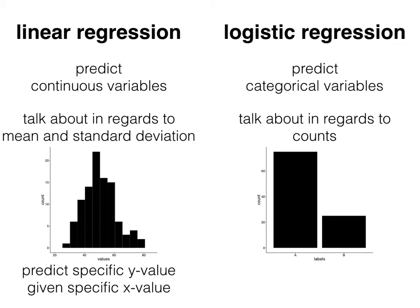Finally, in linear regression, we are predicting a specific y value given a specific x value. But in logistic regression, we're predicting the probability of a given level of a y category given a specific x value. Now I'll go into a little more detail of what I mean by this.